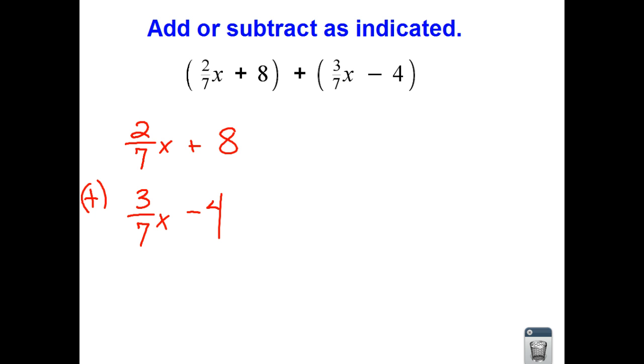Now, this one, we don't have to worry about getting a common denominator because they already gave us common denominators. So we know that we can take our numerators and add them. So I have 2 plus 3, which is 5 sevenths x. We got our like terms together. We put our x's with our x's. And now we are going to combine our constant terms.